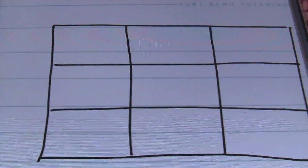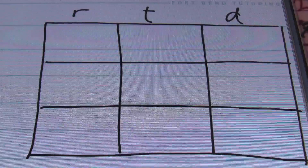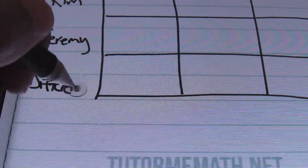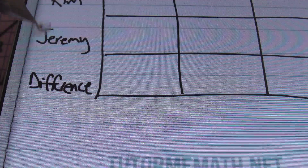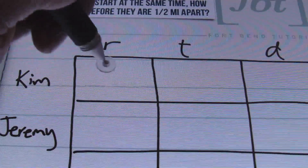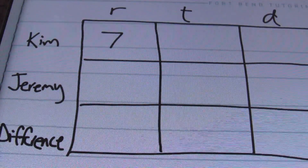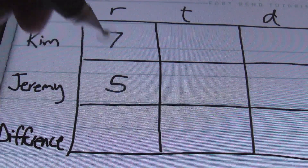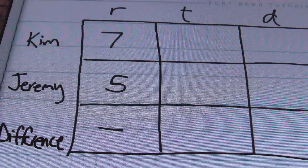Let's see what happens here. We're using the distance formula, so I'll label this as my rate, my time, and my distance. Over here we have two runners: Kim and Jeremy. What I'll need here is their difference, because they need to be half a mile apart — we'll need to subtract. Kim runs at 7 miles per hour, and Jeremy runs at 5 miles per hour. We don't need the total rate, so I'll leave that blank.